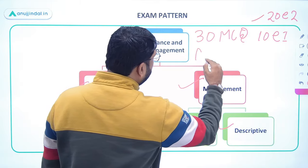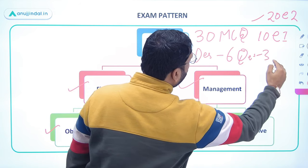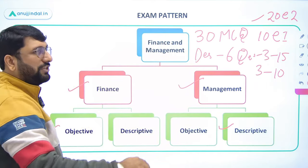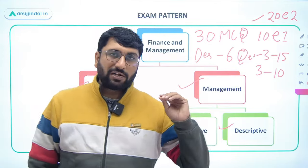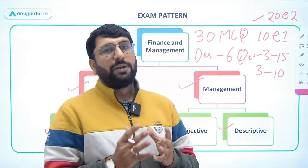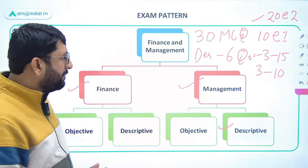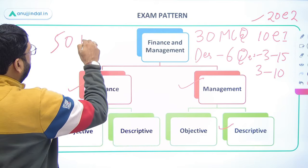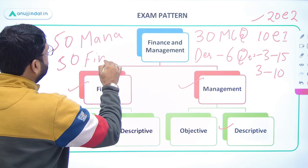For descriptive questions, there are 6 questions where 3 are of 15 marks and 3 are of 10 marks, out of which you only have to attempt 4 questions — so technically 2 from the 15-mark questions and 2 from the 10-mark questions. Based on past year paper analysis, the marks are approximately equal between finance and management, meaning out of the total 100 marks, 50 belong to management and 50 to finance.